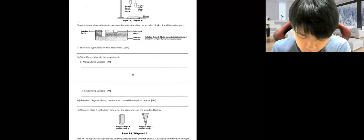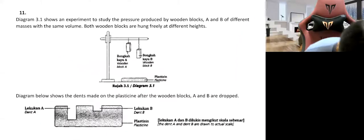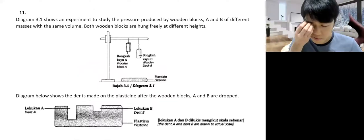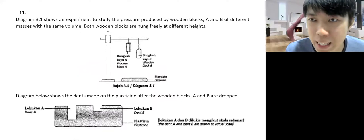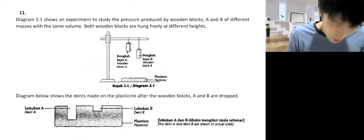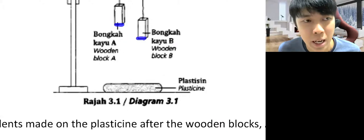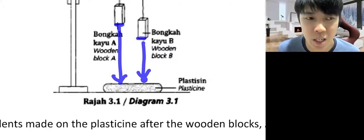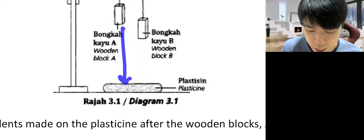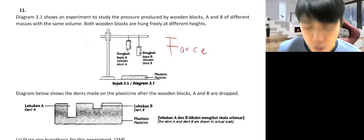Whenever you do questions like this, please identify which factor is being tested. There are only two factors: force or surface area. Obviously, this question is not about surface area — both blocks are dropped the same way, but from different heights. Different height means different force, and their weight itself is the force. So this question is about the force factor. The one dropped from a higher height goes deeper, and the other is shallower. How deep the dent is represents the pressure produced.